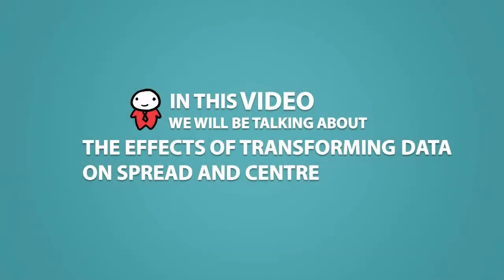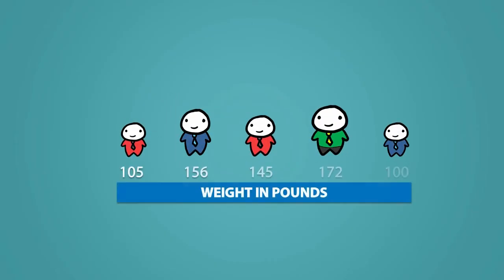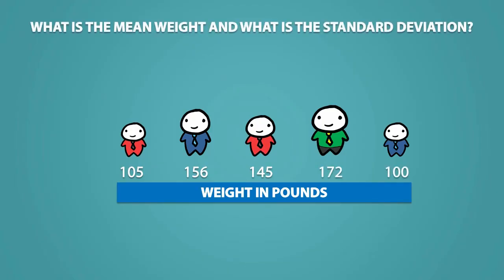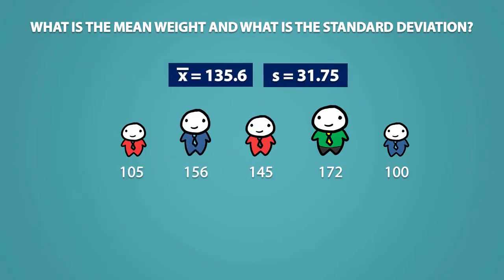In this video, we will be talking about the effects of transforming data on spread and center. Suppose I took a sample of 5 university students from Winnipeg and we recorded their weights in pounds. The mean is equal to 135.6 and the standard deviation is equal to 31.75. Remember that the mean and standard deviation are respectively measures of center and spread.